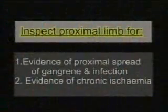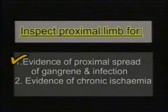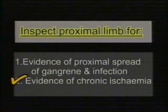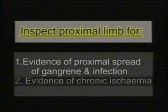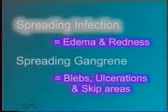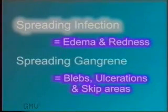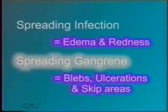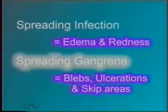Inspect the proximal limb for evidence of proximal spread of gangrene and infection and for evidence of chronic ischemia. Look for proximal spread of the gangrene. Presence of redness and edema in the proximal skin suggests active infection as in a wet gangrene. The skin may show blebs, ulceration, and black-colored skip areas suggesting proximal spread of the gangrene.